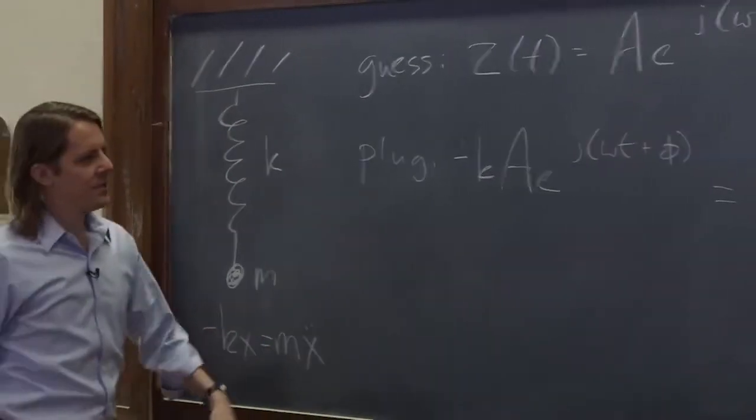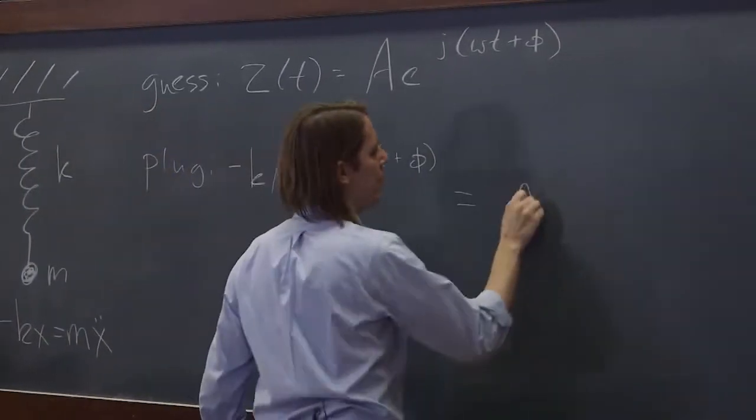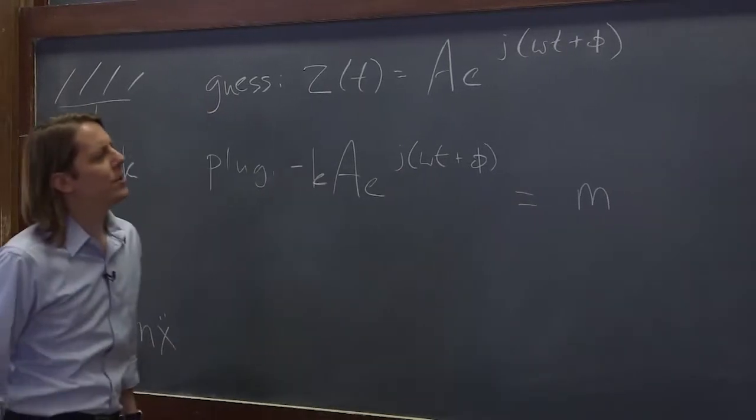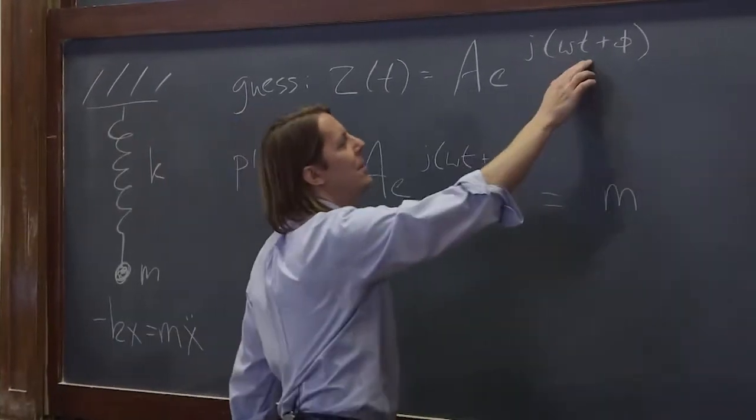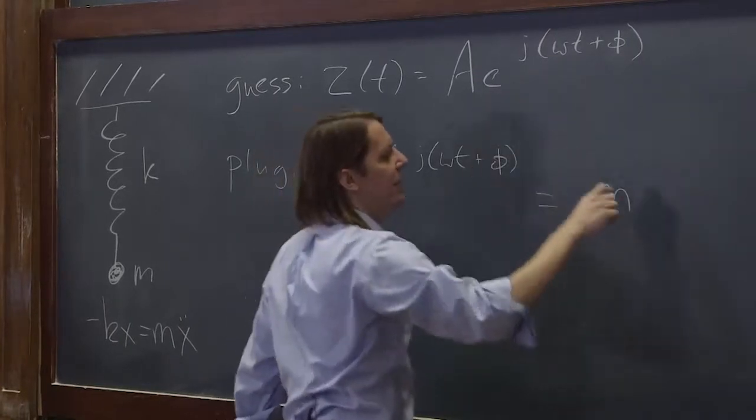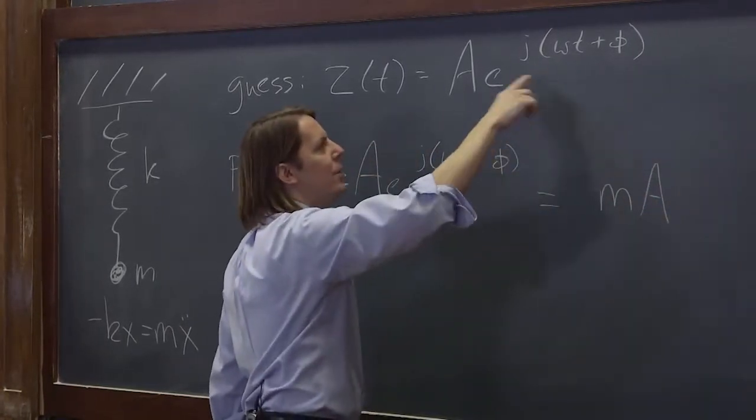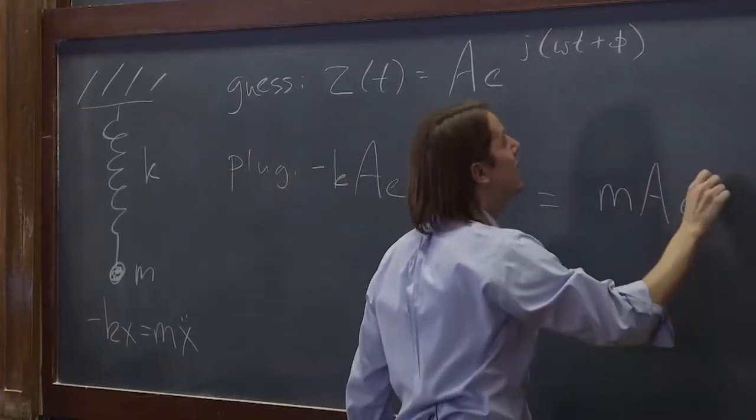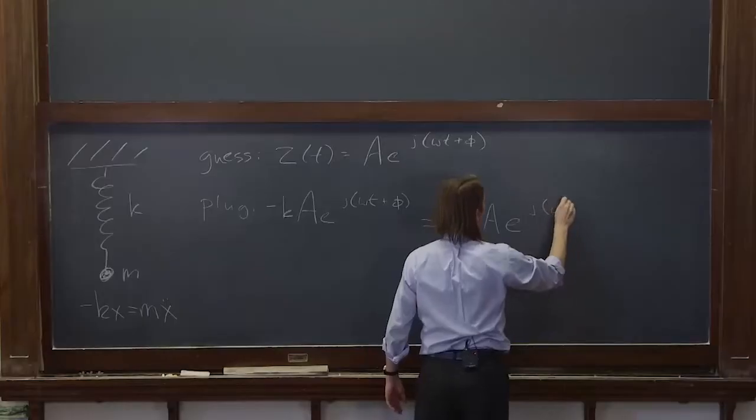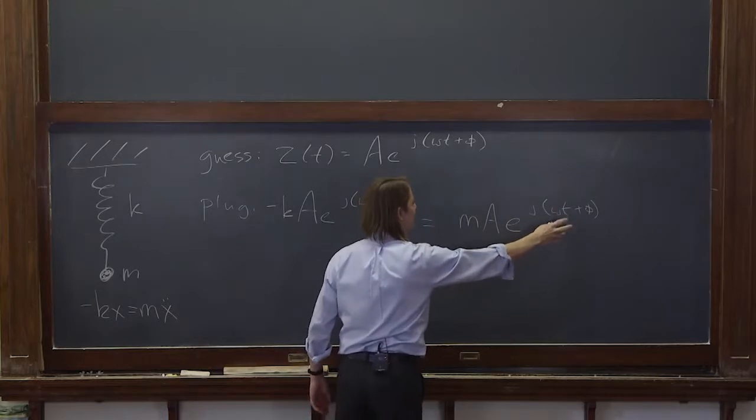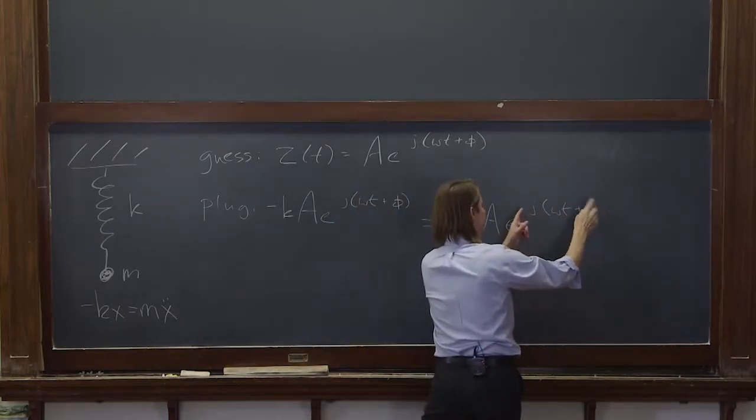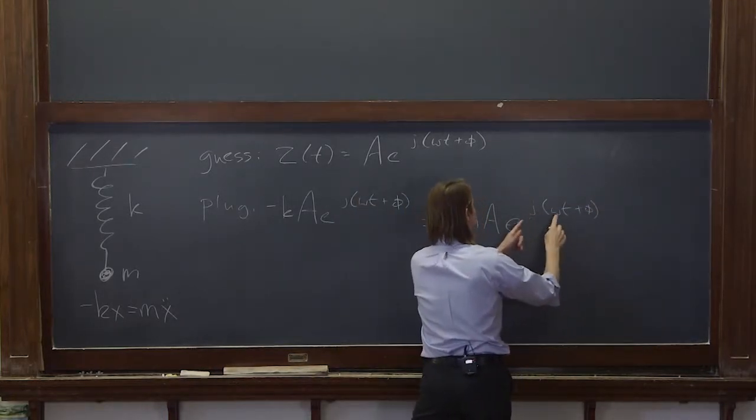equals the mass times two derivatives. So let's see, we're going to take the derivative of e to the something with respect to time. The a is along for the ride. We know that the derivative will end up, you'll just write the same function, e to the j omega t plus phi. But each time you take the derivative, you bring down the derivative of this with respect to time. So that's j omega.